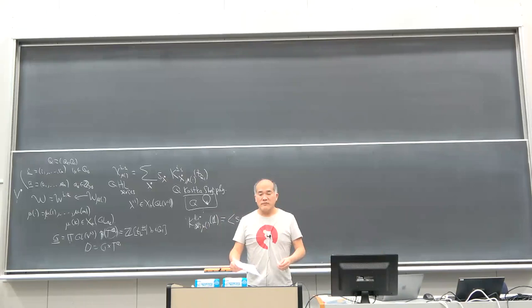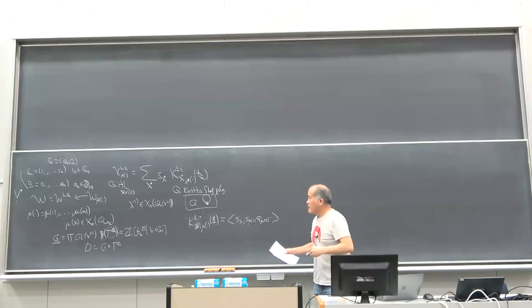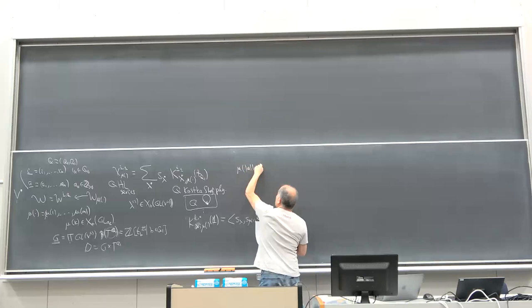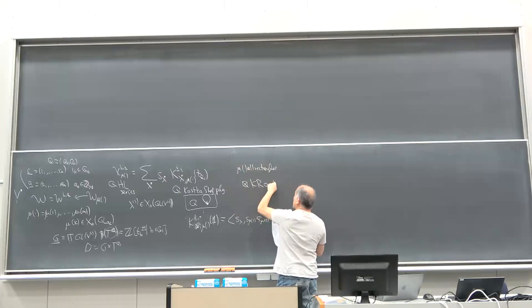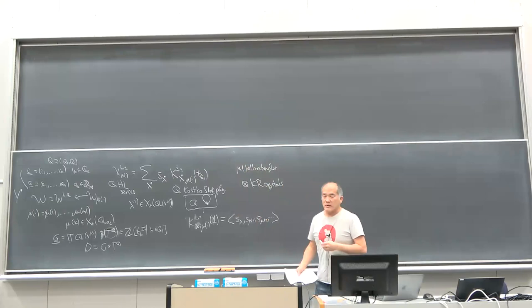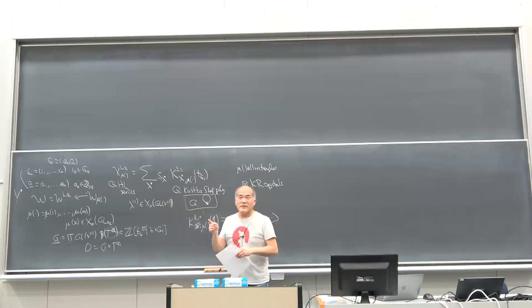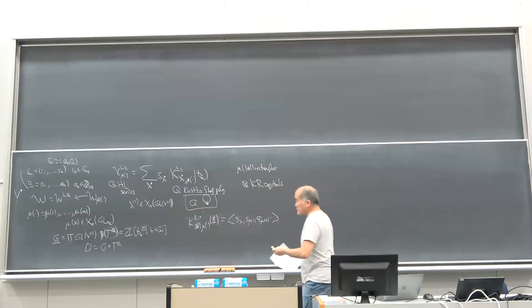Takeshi Ikeda asked me a question after the last lecture that more of you should have asked. In the case of μ-dot being all rectangles, one of the things we got was a product of Kirillov-Reshetikhin crystals. If you restrict the character to finite GL(n), you get a polynomial appearing in another situation — that's a great question everyone should have asked.